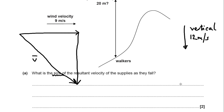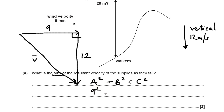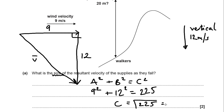But that's just one method — maybe you're not so comfortable with that. You should recognise that you've got a right-angled triangle, of which you know this side is 9 and this side is 12. A nice simple maths question is applying Pythagoras' theorem: the square on the hypotenuse is equal to the sum of the two smaller squares. So, a² + b² = c². Therefore, 9² + 12² = c². 9 squared plus 12 squared equals 225, so c is the square root of 225, which is 15. You must put the unit on the end — it's a velocity of 15 metres per second.